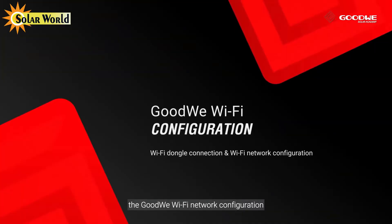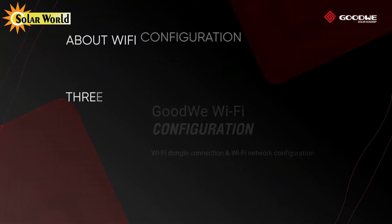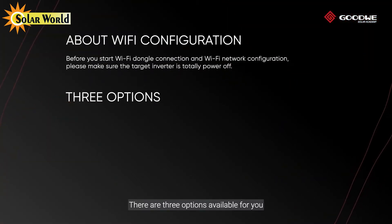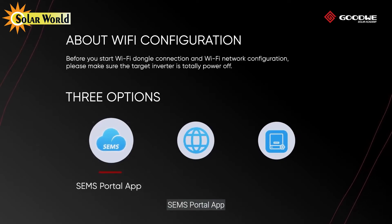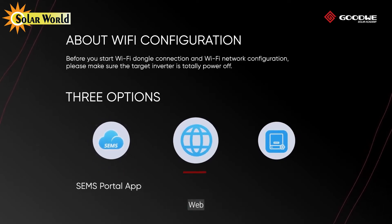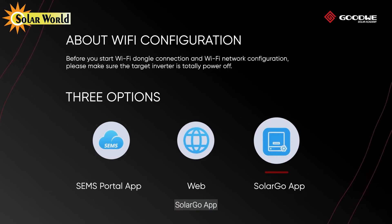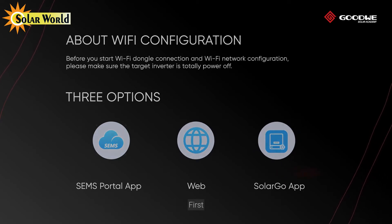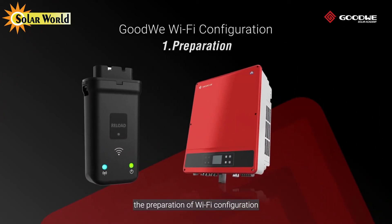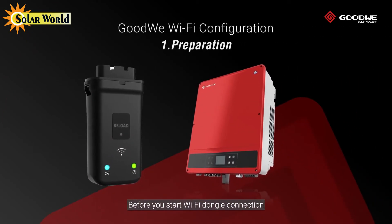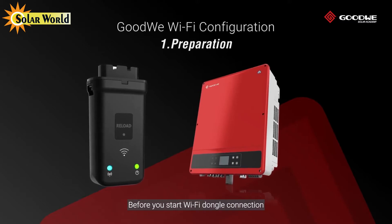Today we will take you through the SEMS Wi-Fi network configuration. There are three options available: SEMS Portal App, Web, and Solar Go App. First, the preparation of Wi-Fi configuration before you start — Wi-Fi dongle connection and Wi-Fi network configuration.